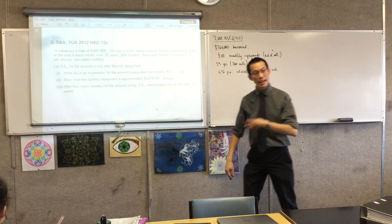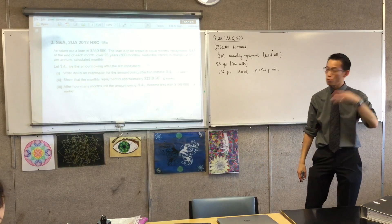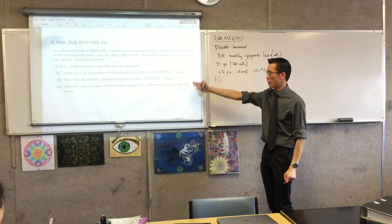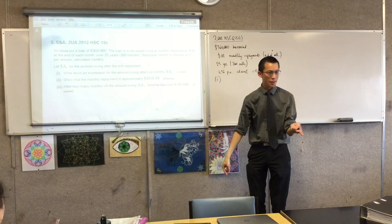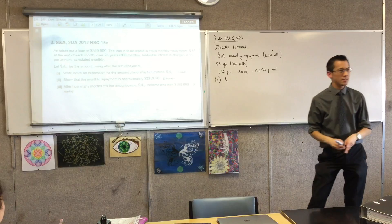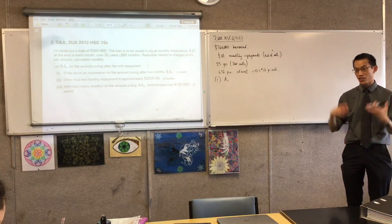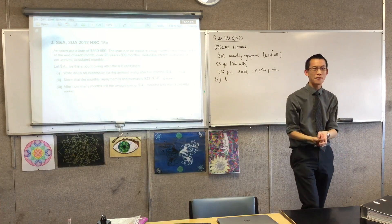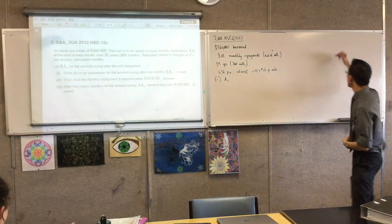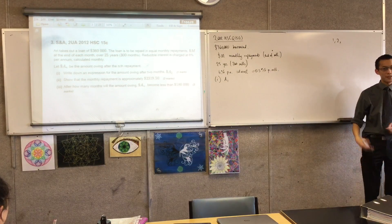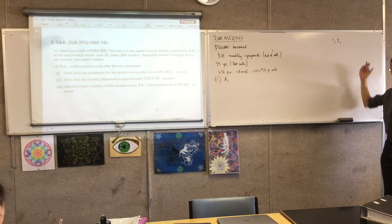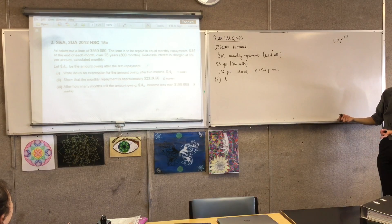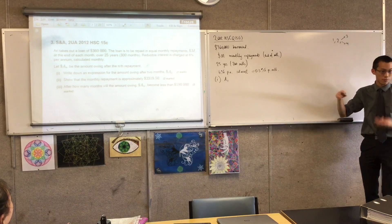Let a_n be the amount owing after the nth payment, so a_1 is after the first payment, a_2 is after the second, etc. Part 1: write down an expression for the amount owing after the second month. We'll start from scratch, because this comes under series and sequences and a geometric progression is going to appear. You need at least three terms to identify a series — whether it's an AP or a GP.